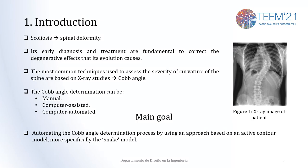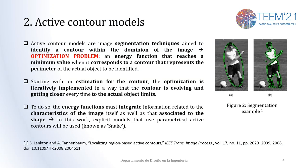Our goal here is to automate the Cobb Angle determination process using an approach based on an active contour model, which is commonly known as a snake model. We are going to start by covering the grounds of these active contour models.